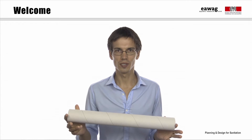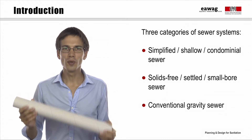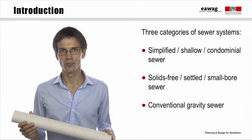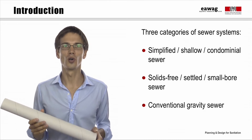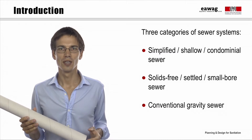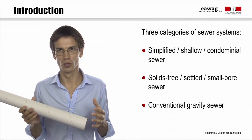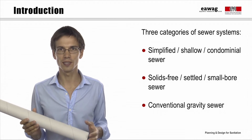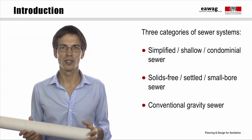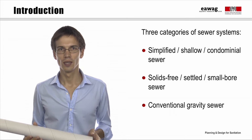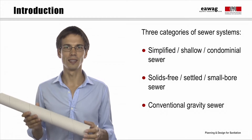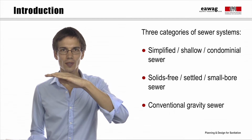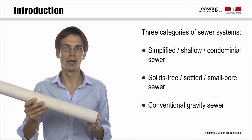We will now look at the different types of sewer systems. We distinguish between three categories: the simplified sewer system, also called shallow or condominial sewer system; the solids-free sewer system, also called settled or small-bore sewer system; and the conventional gravity sewer system. The differences between the three systems can be summarized in terms of the size, the depth, and the slope of the pipes.